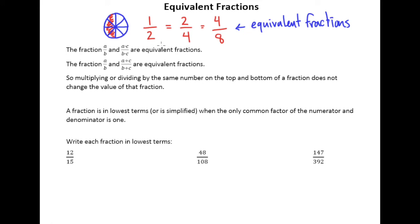And so those two observations lead us to these two statements. The fraction a over b and a times c over b times c are equivalent fractions. The fraction a over b and a divided by c over b divided by c are equivalent fractions. So you can multiply the top and bottom or divide the top and bottom of a fraction by the same number, and it does not change the number. It changes how it looks, but not the actual value of that number.